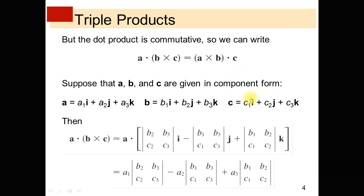Vector C equals C1i + C2j + C3k. Then the scalar triple product A dot (B cross C) equals A dot the determinant — the dot product of A with the cross product of B and C. We can find the cross product of two vectors using a determinant, as discussed in the previous video lecture. Find the cross product of B and C using the determinant, expanding with respect to the first row.